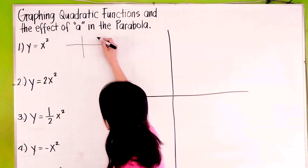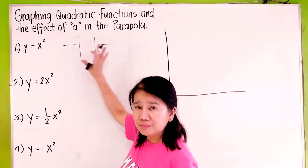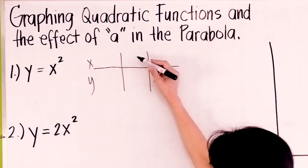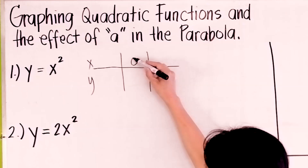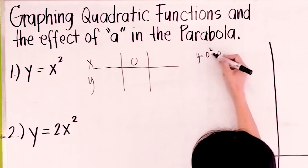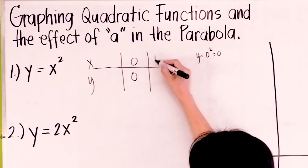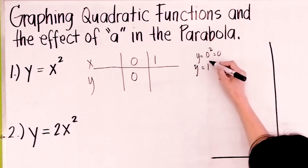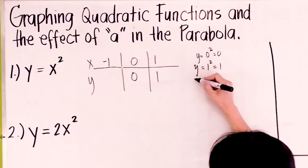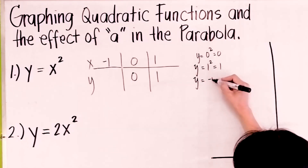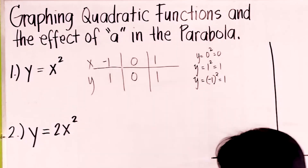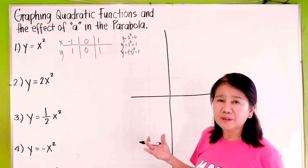We draw a table and find the values of x and y. If we let x be 0, y equals 0 squared, which is 0. If we let x be 1, y is 1 squared, you get 1. And if we let x be negative 1, y equals negative 1 quantity squared, which is 1. Let's graph the parabola.